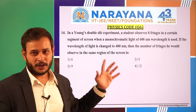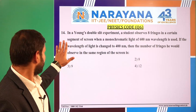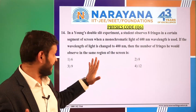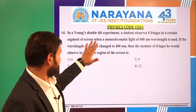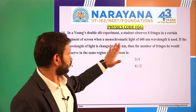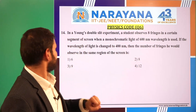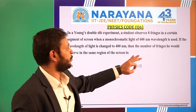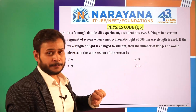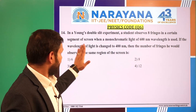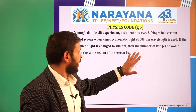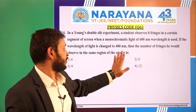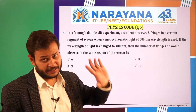That last question was a bit calculative. Moving to question 14, from wave optics — Young's double slit experiment. A student observes 8 fringes in a certain segment of a screen where monochromatic light of 600 nm wavelength is used. If the wavelength is changed to 400 nm, then the number of fringes observed in the same region of the screen is?